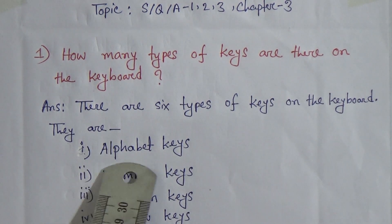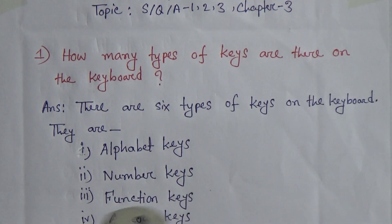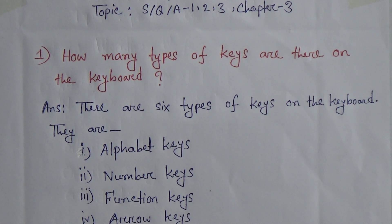They are number 1 alphabet keys, 2 number keys, number 3 function keys, number 4 arrow keys, number 5 space bar and number 6 enter key.